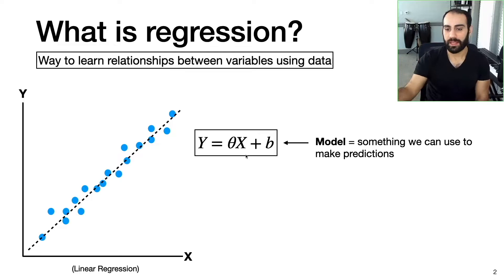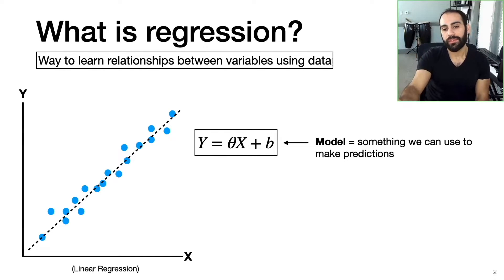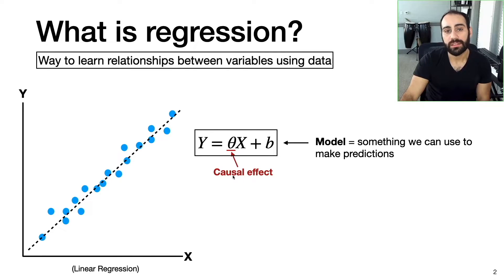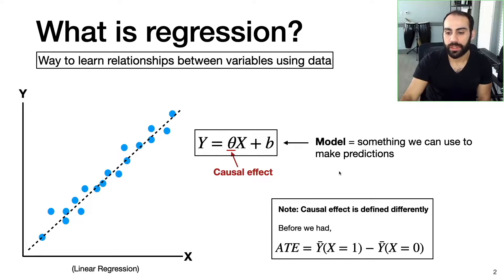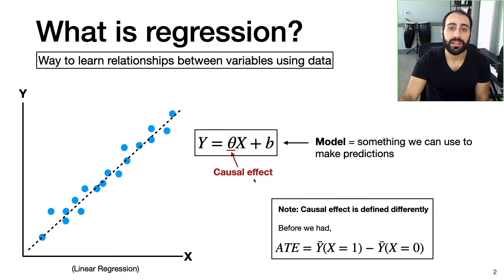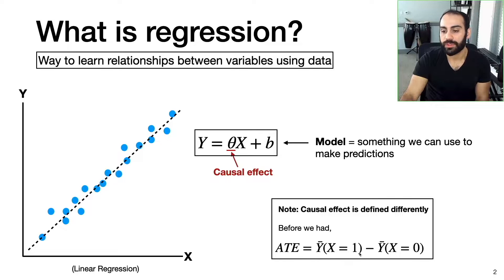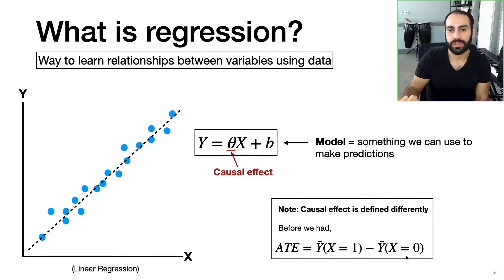This is an example of a linear model. If you give me a value for x, I can make a prediction about the value of y. Where the causal effects come in is: if we have a linear model like this with a variable x and a variable y, we can interpret this coefficient theta as the causal effect of x on y. This is a fundamentally different way to define causal effects compared to previous videos, where we defined the causal effect through the average treatment effect — the difference in mean outcomes for two groups, where x equals one represents receiving a treatment like taking a pill, and x equals zero represents not receiving treatment.